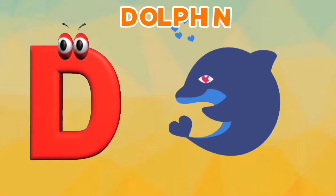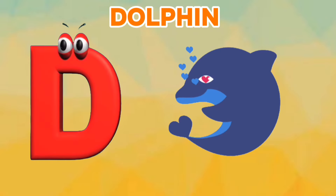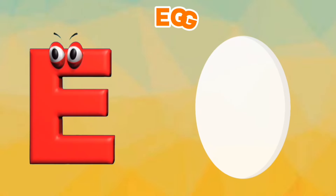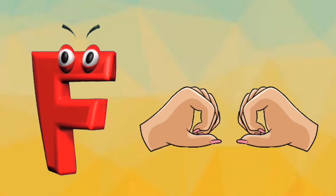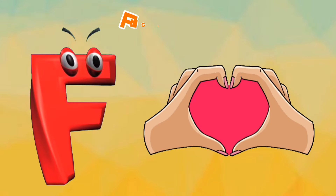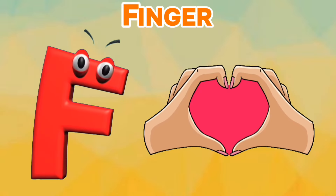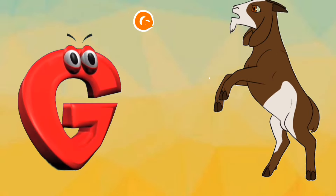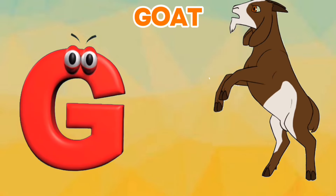D is for Dolphin. D, D. Dolphin. E is for Egg. E, E. Egg. F is for Finger. F, F. Finger. G is for Goat. G, G. Goat.